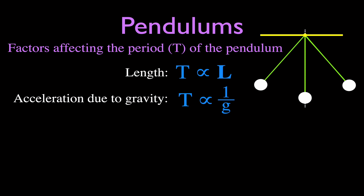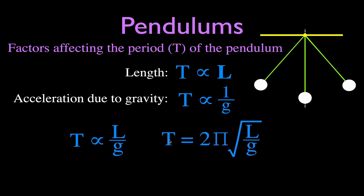To summarize: the length does affect the period and they are directly proportional — increase the length, increase the period; decrease the length, decrease the period. The acceleration due to gravity also affects the period, and they are inversely proportional — increase gravity, decrease period; decrease gravity, increase period. Those are the only two things that affect the period. We can write this as: the period is directly proportional to length and inversely proportional to gravity, and the actual equation is T = 2π√(L/g).